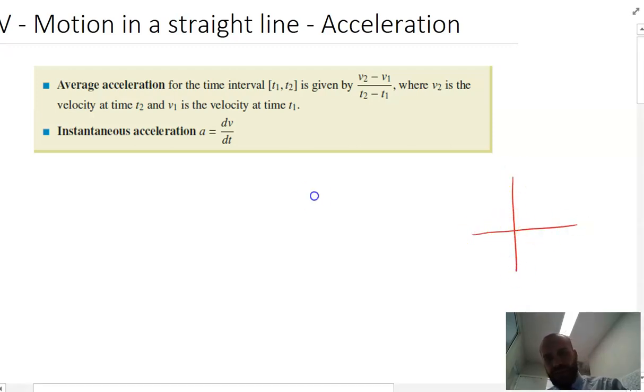So if I've got a velocity function that looks like that, V(t), if I find two points on it and I find the gradient between those two points, I'm finding the average acceleration.